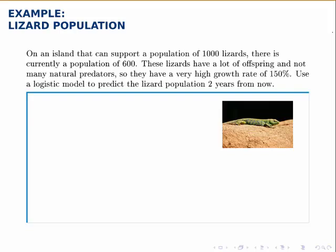Here's another example with the logistic model. We're told that an island can support a population of 1,000 lizards, so that's the carrying capacity, and the population is currently 600.